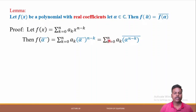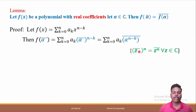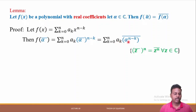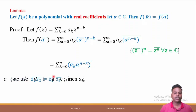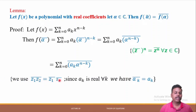This becomes Σ(k=0 to n) aₖ · (α^(n−k)) bar. We have used the property that taking the conjugate and raising to power n is the same as raising to power n and then taking the conjugate. This can be rewritten as aₖ · (α^(n−k)) bar, using the property z₁z₂ bar = z̄₁ · z̄₂.